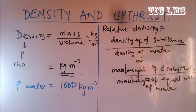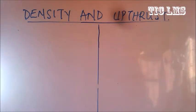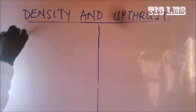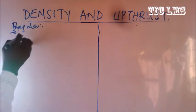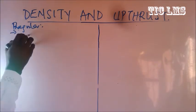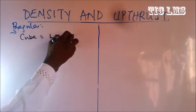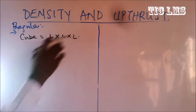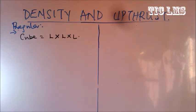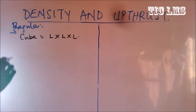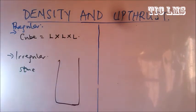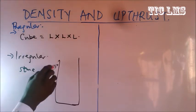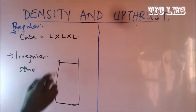For you to know the density of a body, we have a body which is regular. A regular body is one where we can easily calculate the volume using a particular formula. For instance, the volume of a cube is length times length times length. This cube is an example of a regular solid and we can easily calculate its volume.